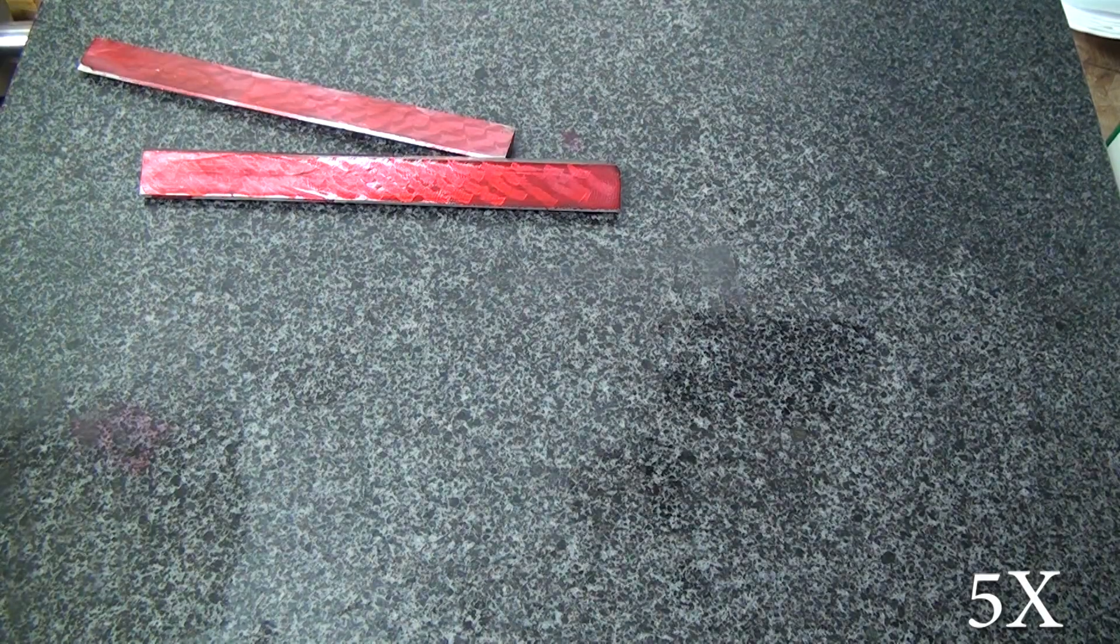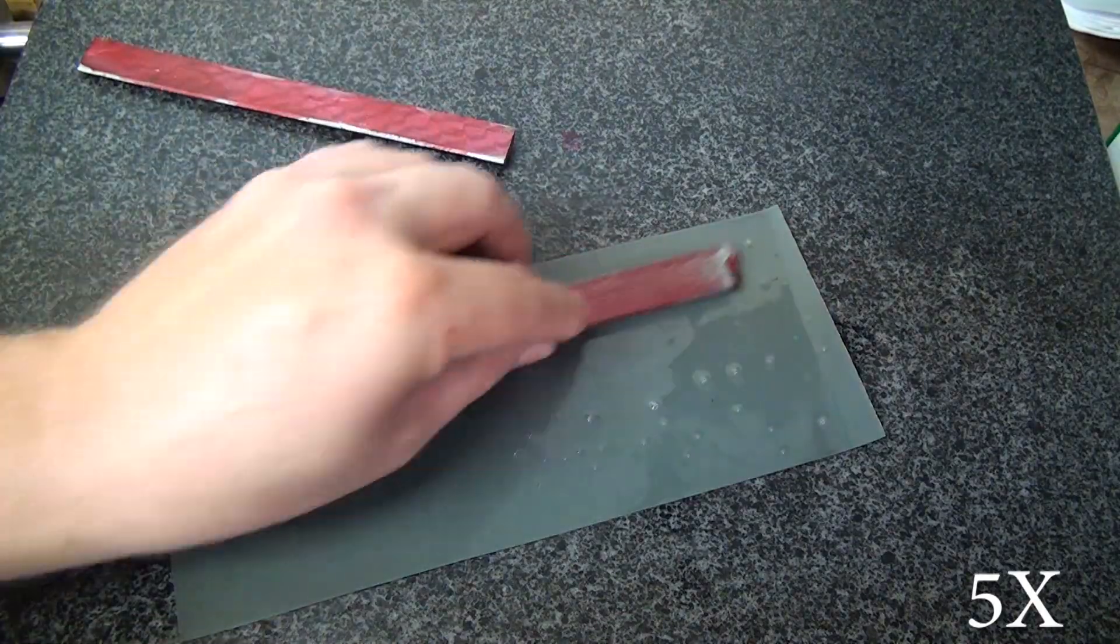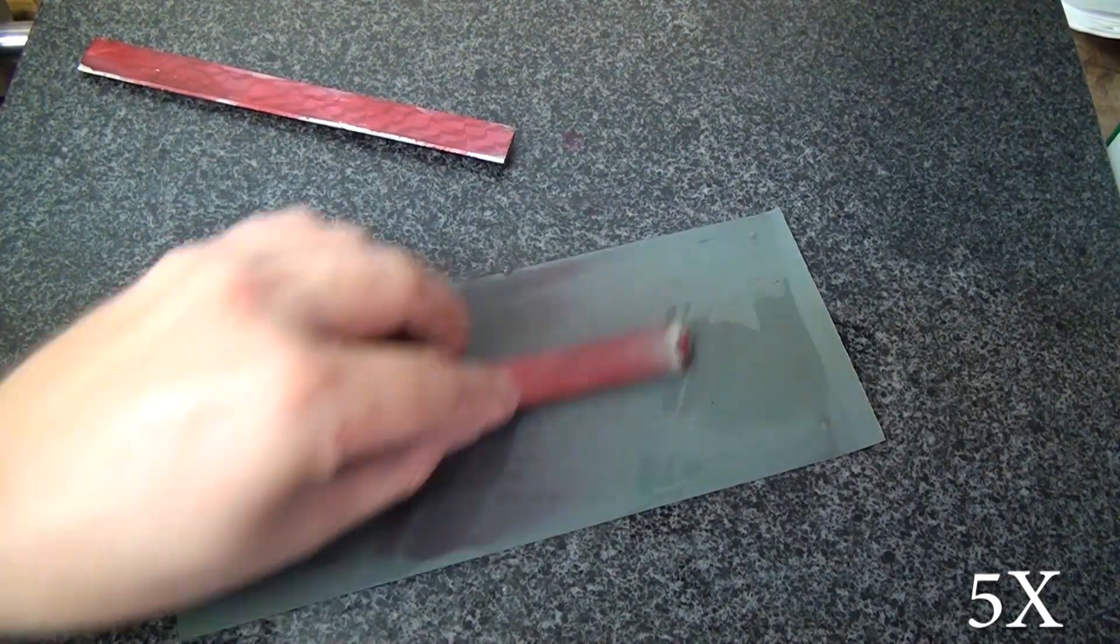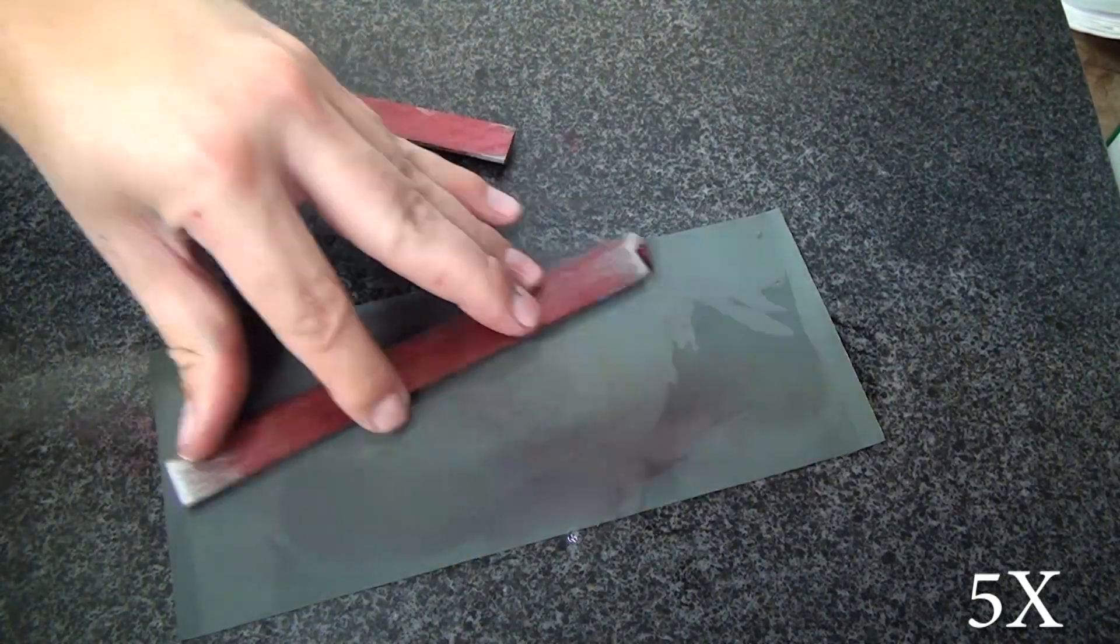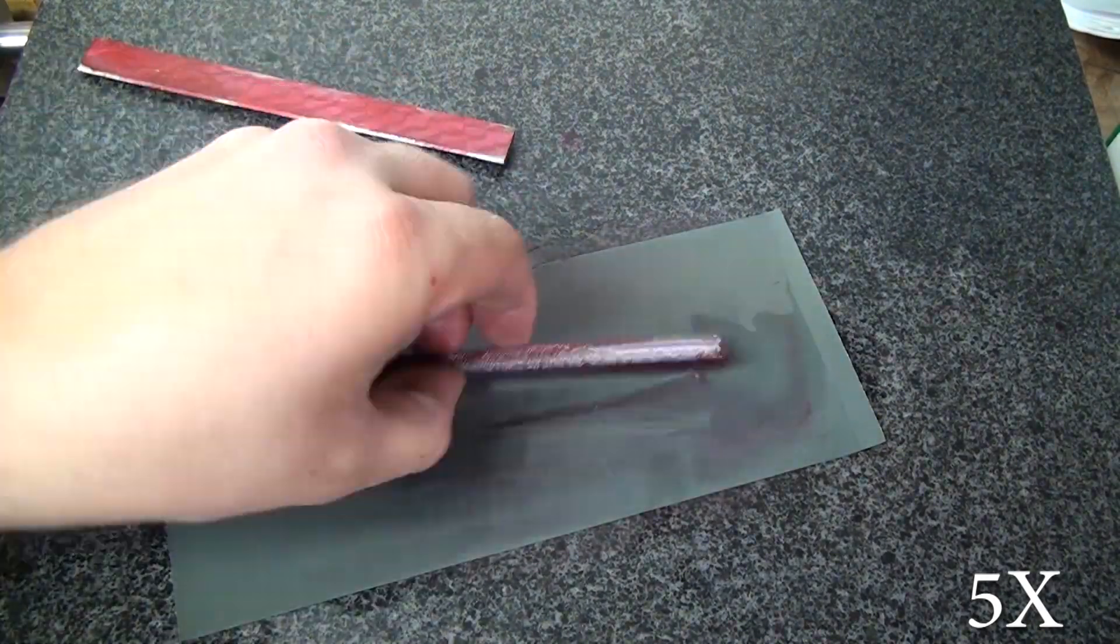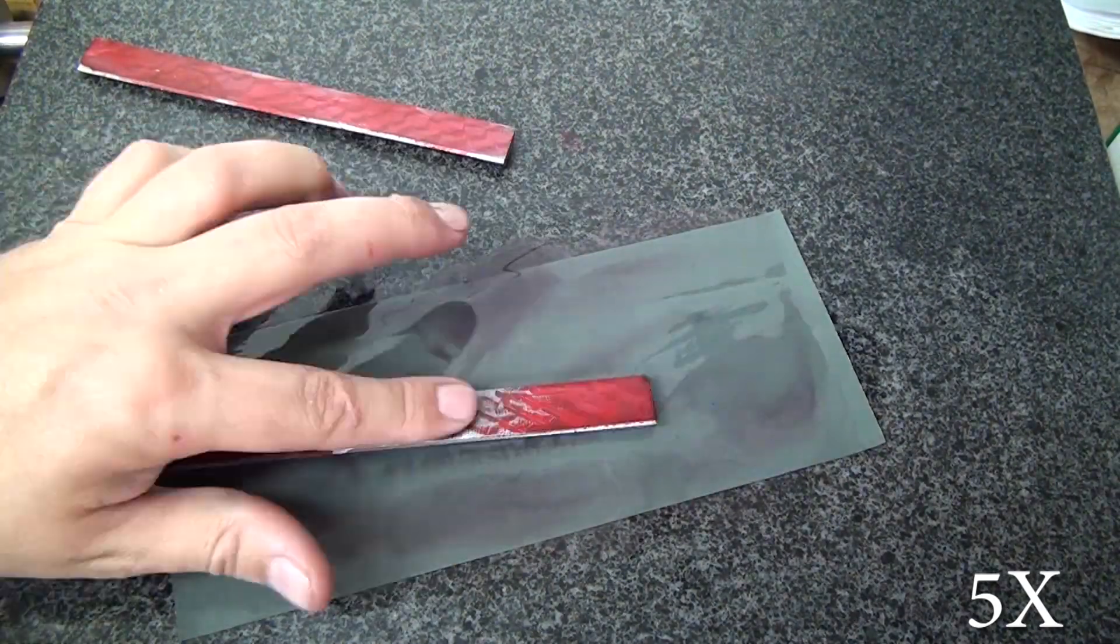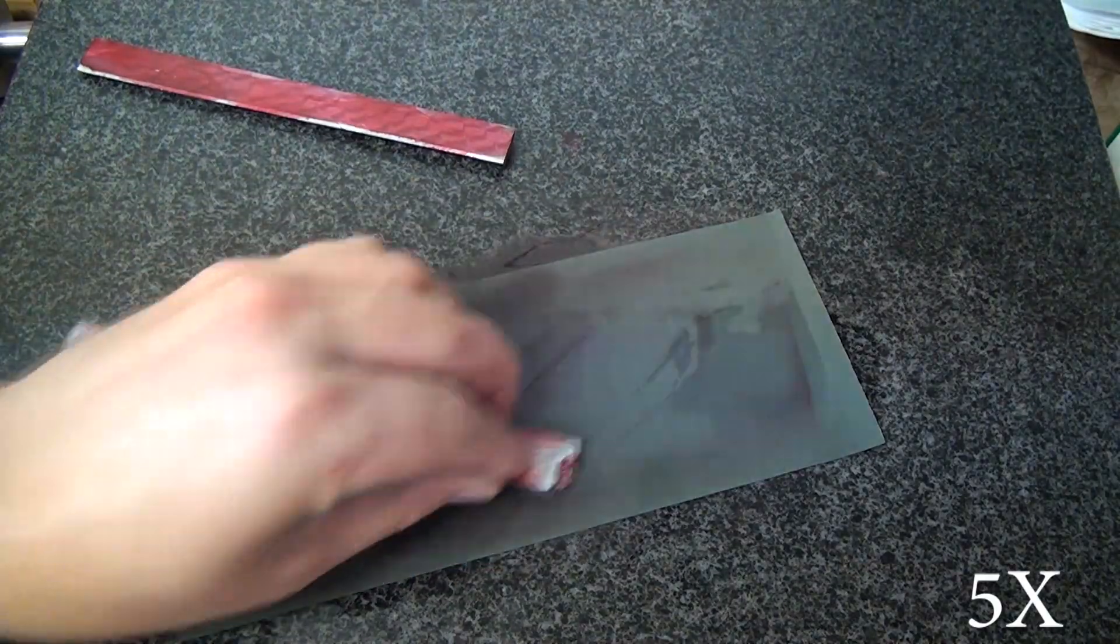The sanding that I'm doing here is very light, and by that I mean I'm not putting any downward pressure on the gibs itself. I'm simply stroking it back and forth trying to knock the Dykem off, and you can see that on my X-gib it's bowed towards the back side, that is the non-scraped side of the gibs.